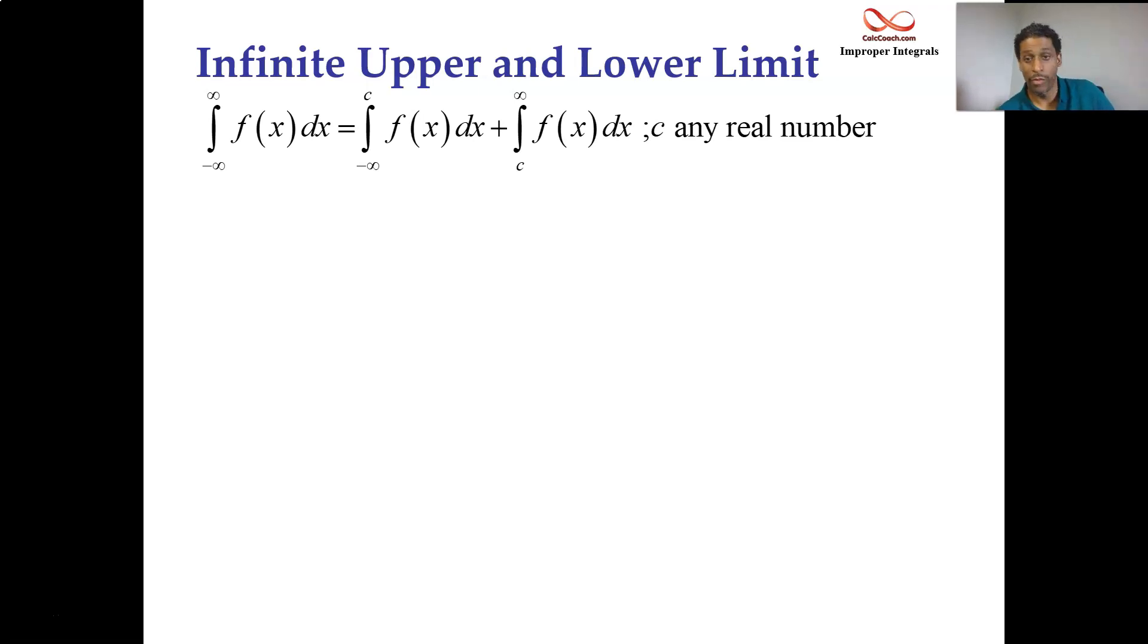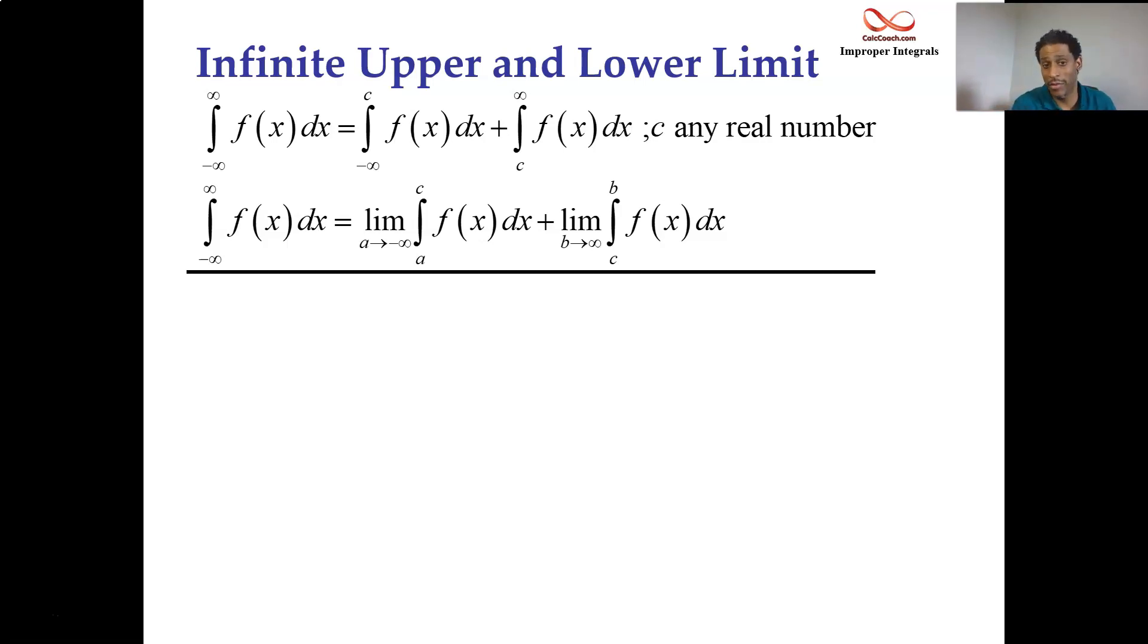What about if there's an infinite upper limit and an infinite lower limit? We have minus infinity to infinity. Here's what you do. You pick any number whatsoever. Something simple would be nice like zero or one. And you break your integral into two integrals. You go from negative infinity up to that number. Then you go from that number off to infinity. And then with those guys being improper, you replace them with a variable and you let that variable approach either infinity or minus infinity. When we have probability, which is coming up soon, most of the integrals are over the entire real line like this. So we have to know how to handle them.